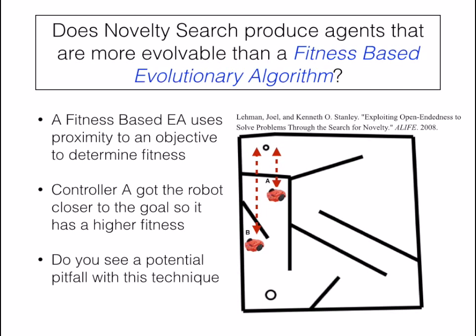So in this case, we have two controllers — Controller A and Controller B. Controller A has a higher fitness because it has the shortest straight-line distance to the goal. Because it has a higher fitness, it has a higher probability of passing on its genes to the next generation, creating more and more robots to get closer and closer to the goal.